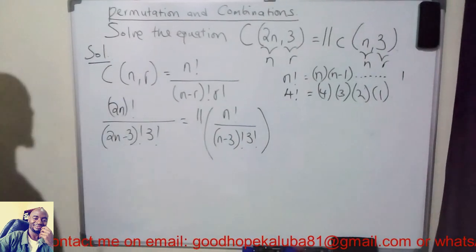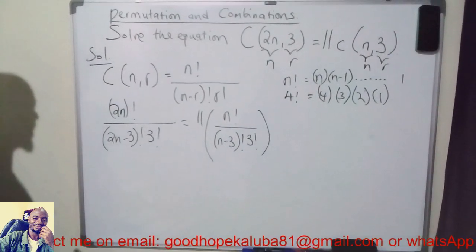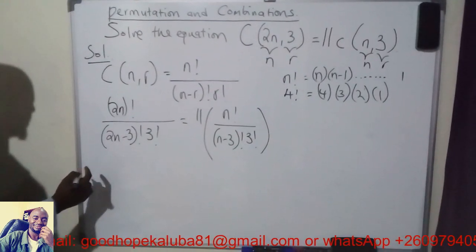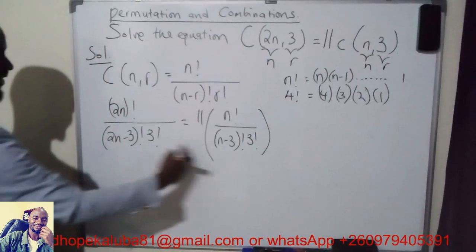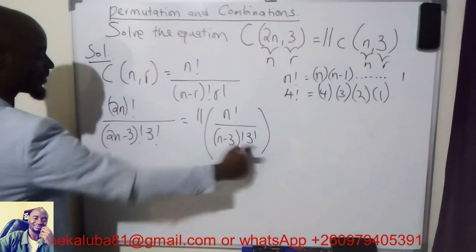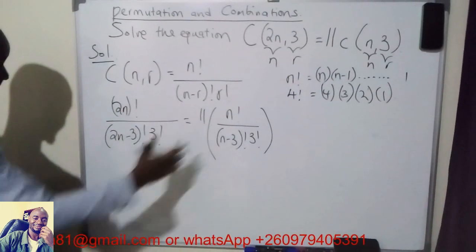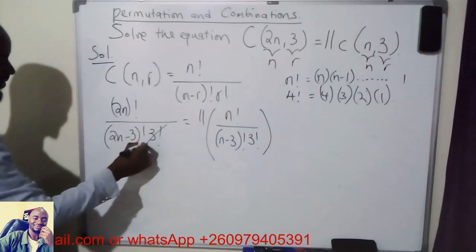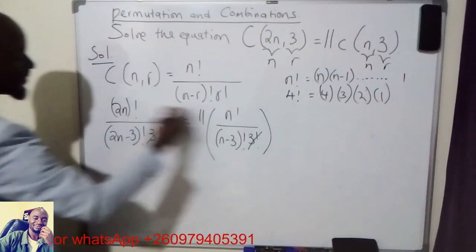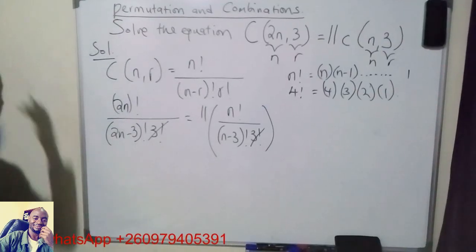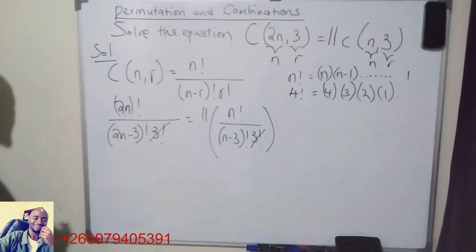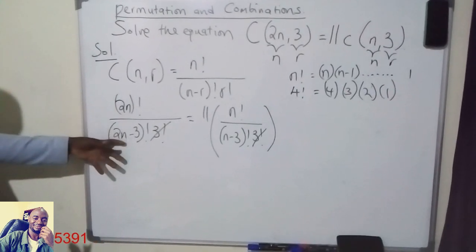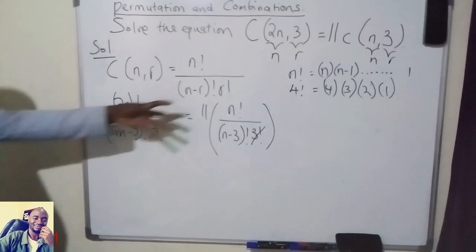Now I need to simplify this and solve for n. You can see that 3 factorial appears on both sides of the equation. So I can simplify it by multiplying both sides by 3 factorial. The next thing I'm going to do is expand these factorial notations.